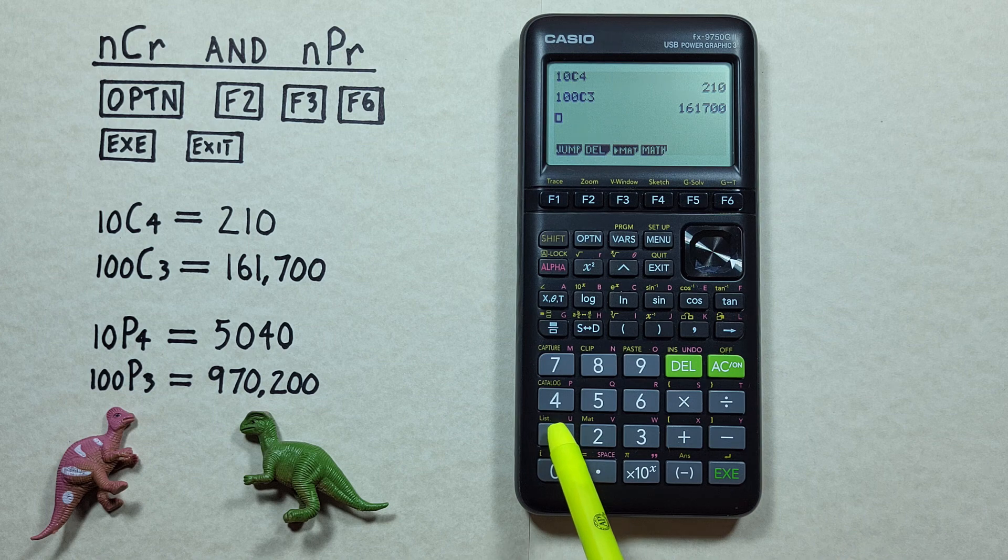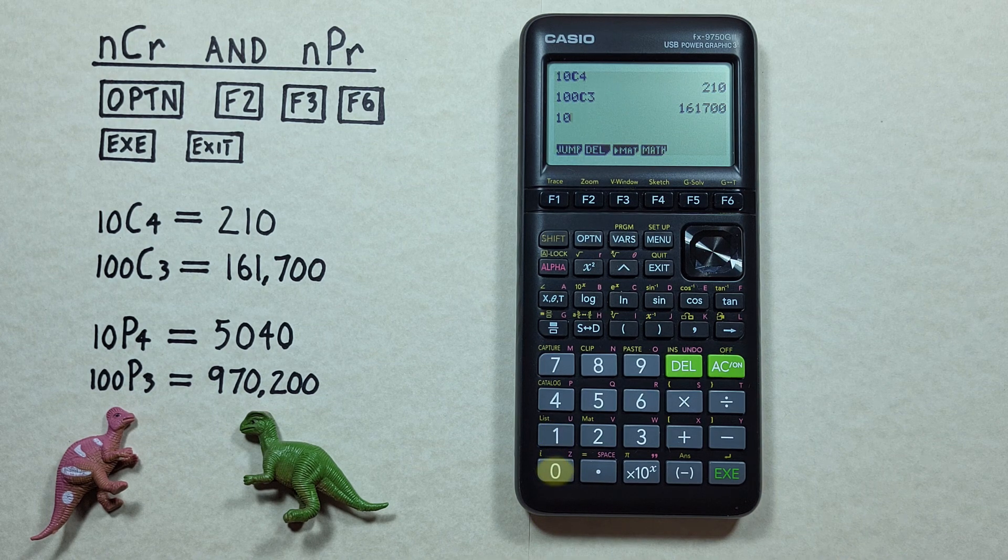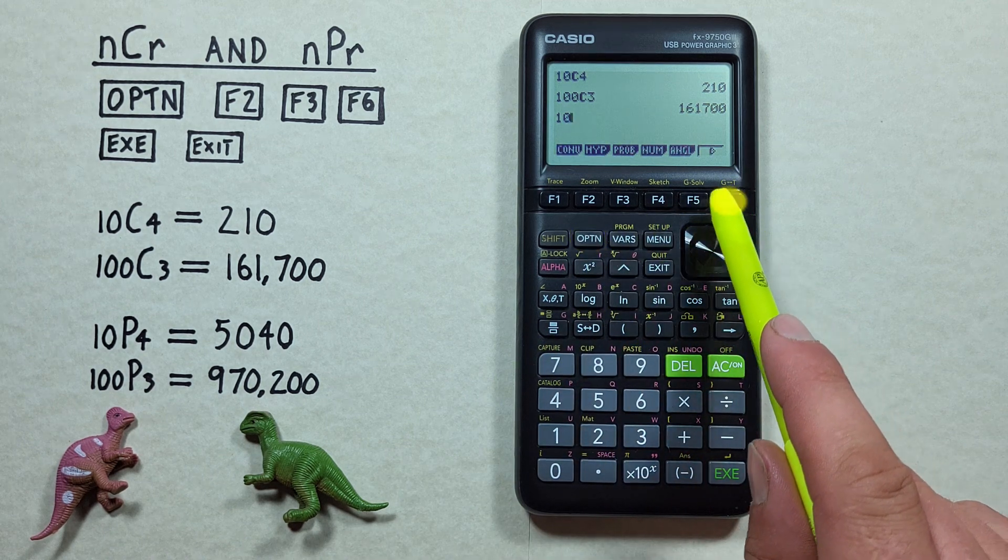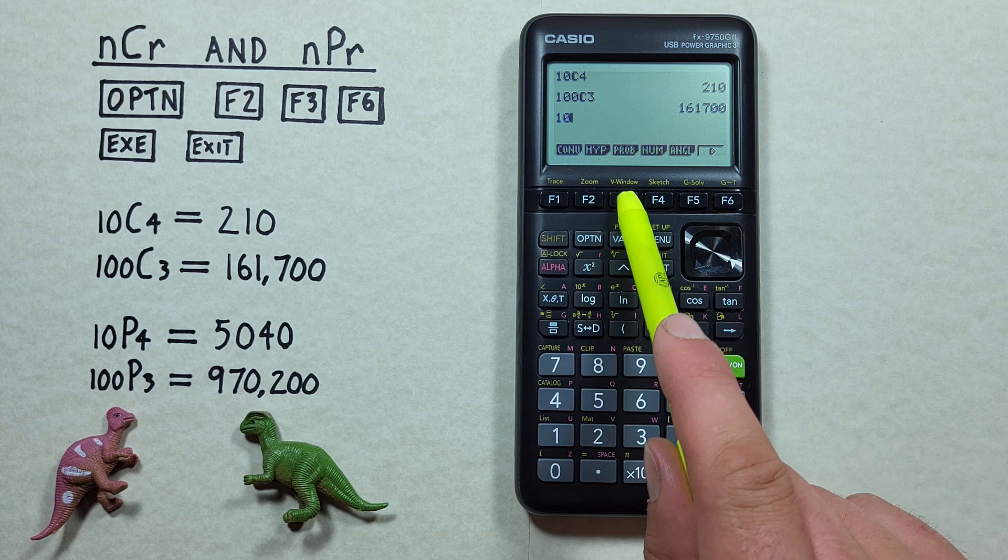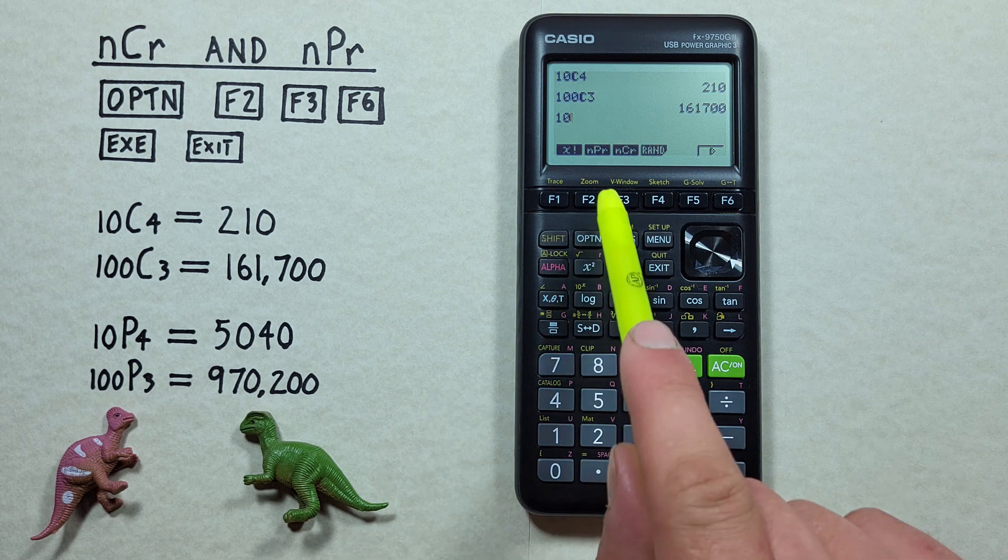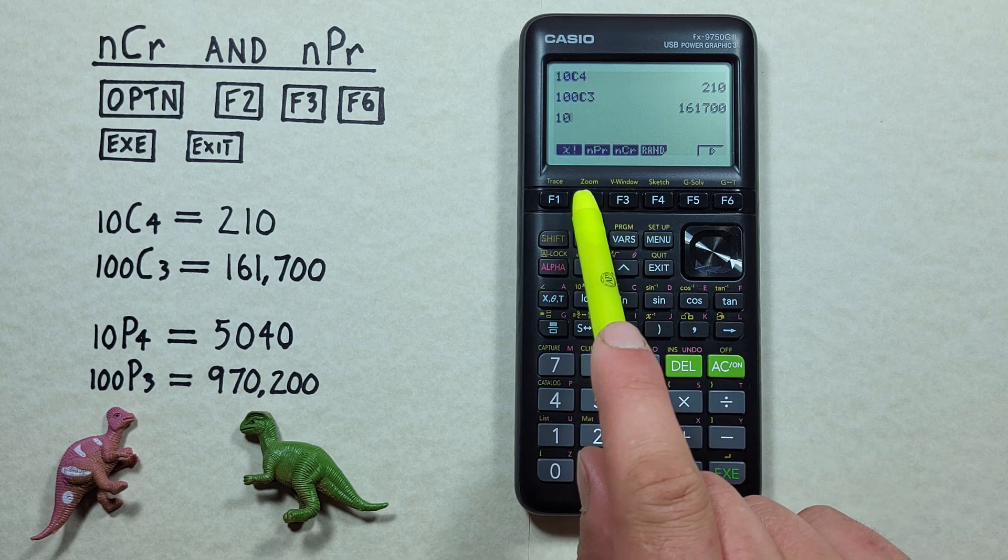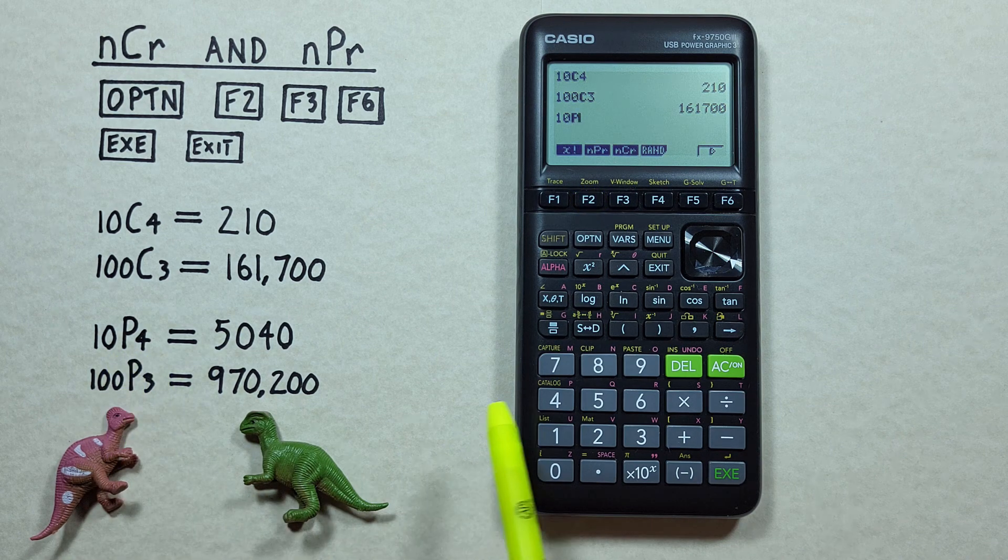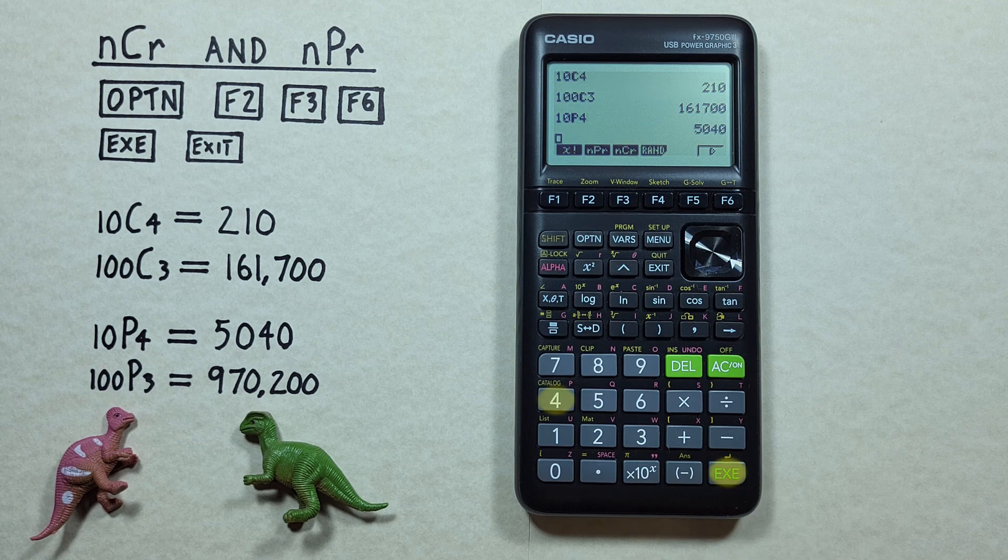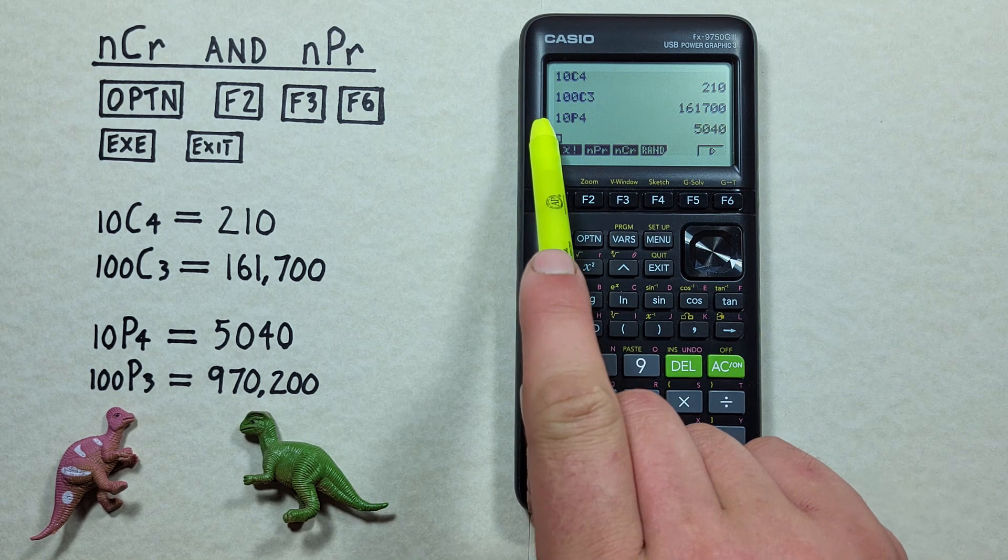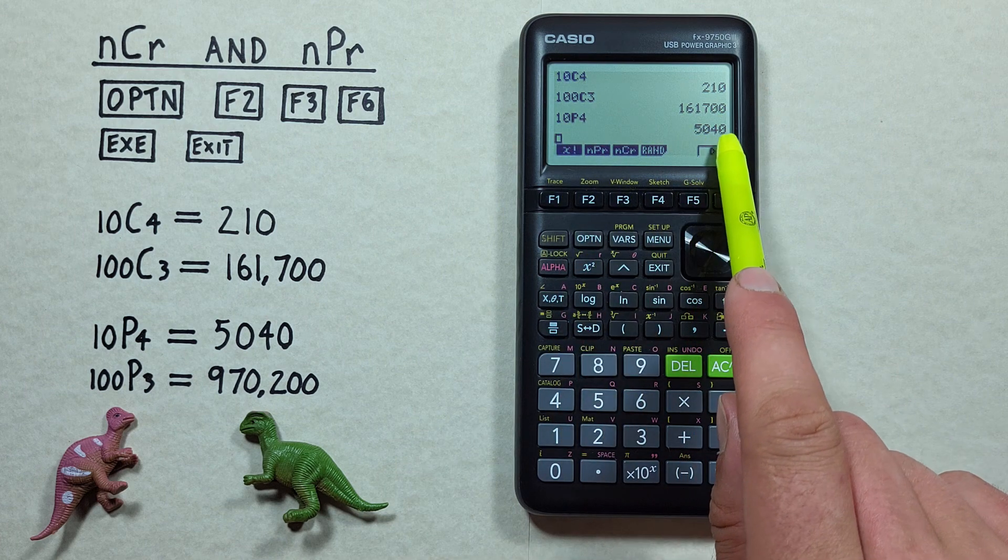First, we enter the 10 on our screen again, and we go back to our probability menu with the Option key, F6 to go to the next menu, and F3 to choose the probability menu. Now, since we're doing permutations, we want the NPR symbol. So we hit F2. And we're choosing 4 objects. So we press 4 and hit the EXECUTE key. And we see we get 10 choose 4 permutations is equal to 5040.